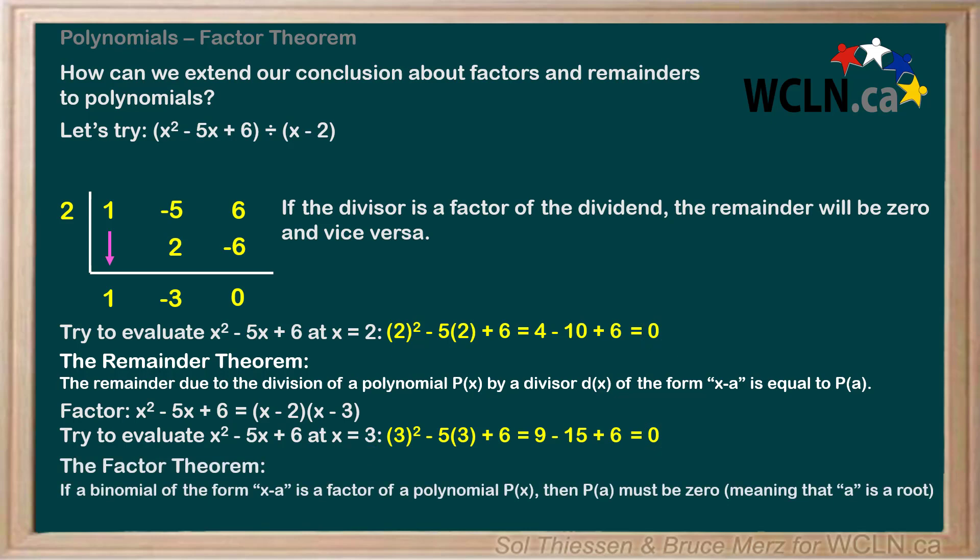If a binomial of the form x minus a is a factor of a polynomial p of x, then p of a must be 0, meaning that a is a root. And the opposite is also true. If p of a is 0, then x minus a must be a factor of p of x.